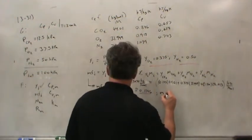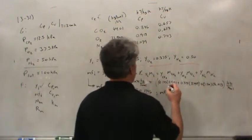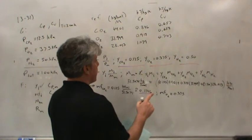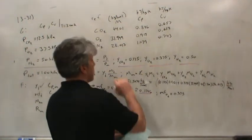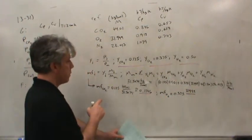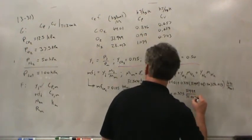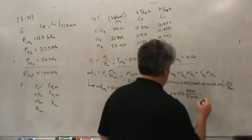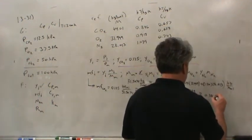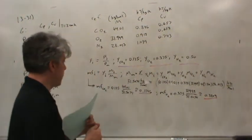The mass fraction of oxygen is 0.375 × (31.999 / 31.5074), which comes out to about 0.3809. So there's the mass fraction of oxygen.